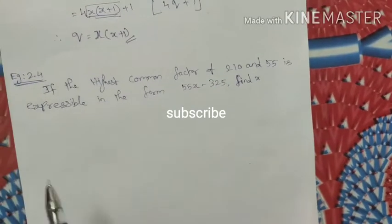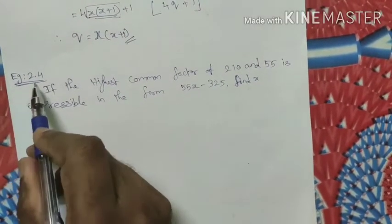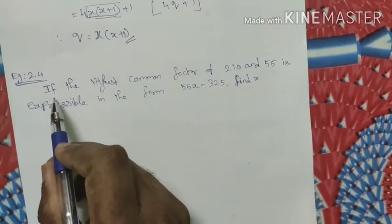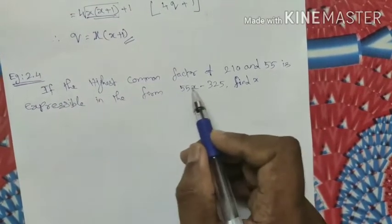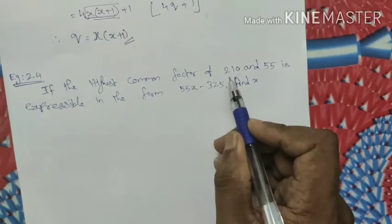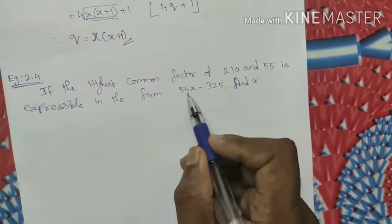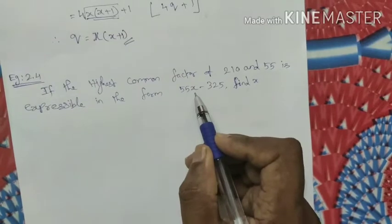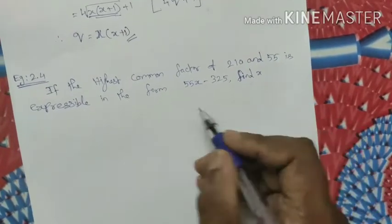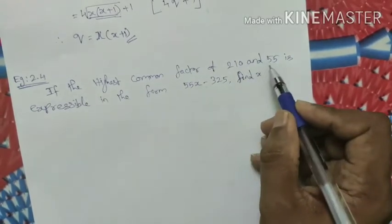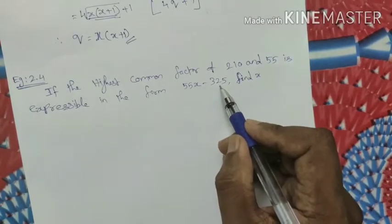Hi students, today we are going to see the second chapter, examples on 2.4. See the question first: if the highest common factor of 210 and 55 is expressible in the form 55x minus 325, find x. This question is about finding the highest common factor and applying the expression formula.